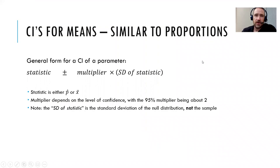One thing to take note is that confidence intervals for means are very similar to confidence intervals for proportions. In fact, we have the same general form for a confidence interval. We have our statistic and we add and subtract what we call the margin of error, a multiplier times the standard deviation of the statistic, that standard deviation of the null distribution.